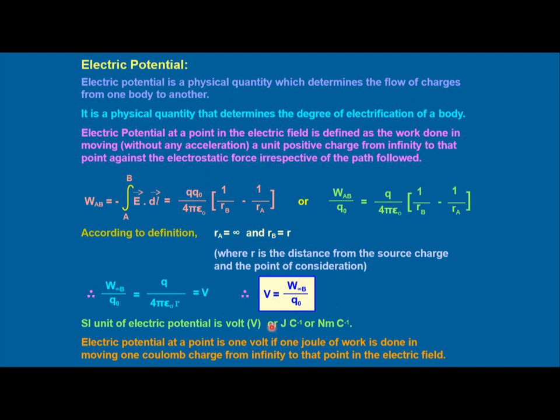The SI unit of electric potential is joule per coulomb or newton meter per coulomb. Electric potential at a point is one volt if one joule of work is done in moving one coulomb of charge from infinity to that particular point in the electric field.